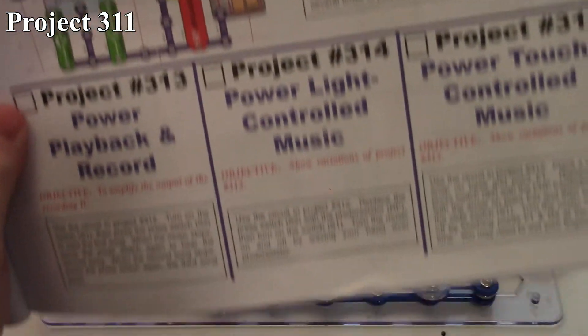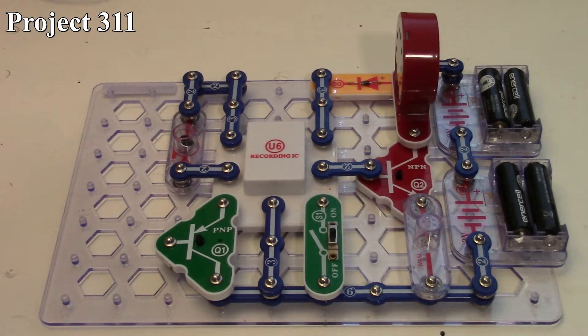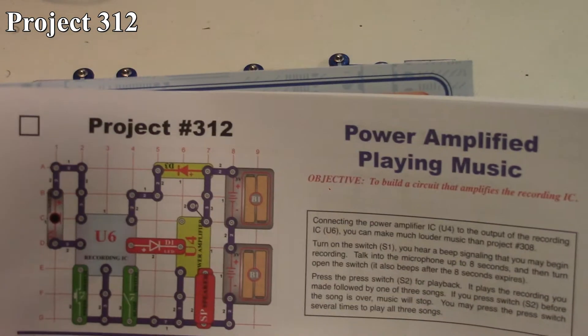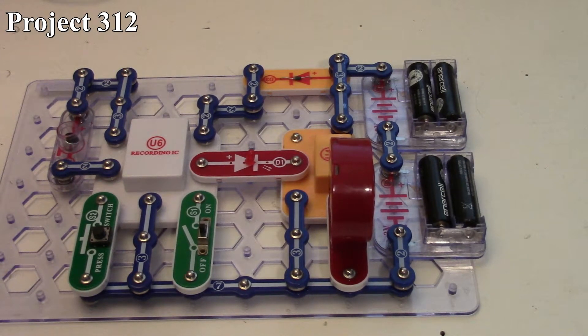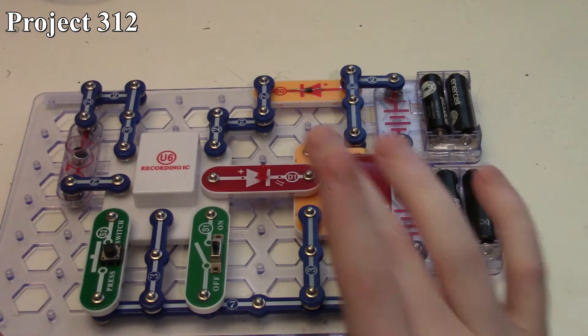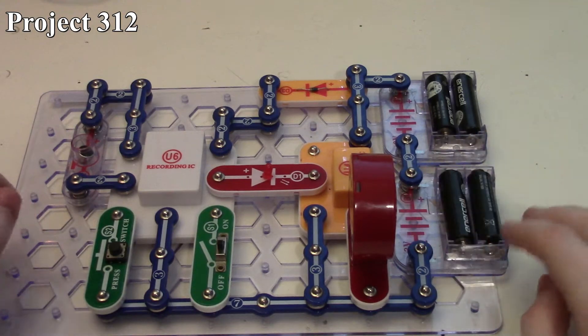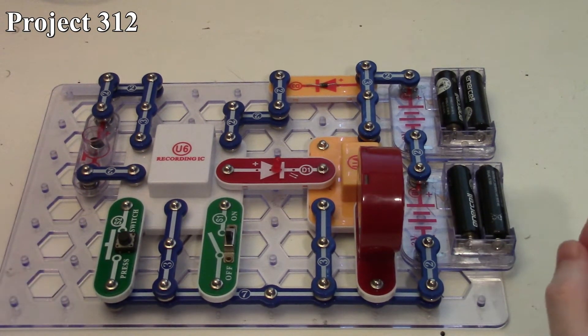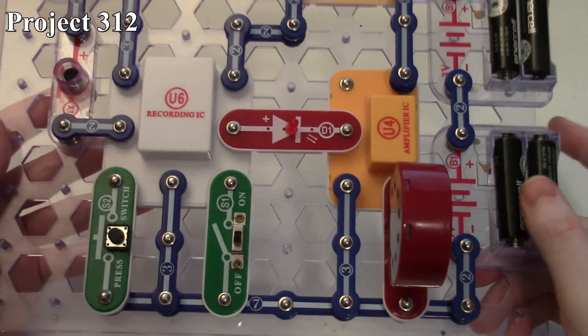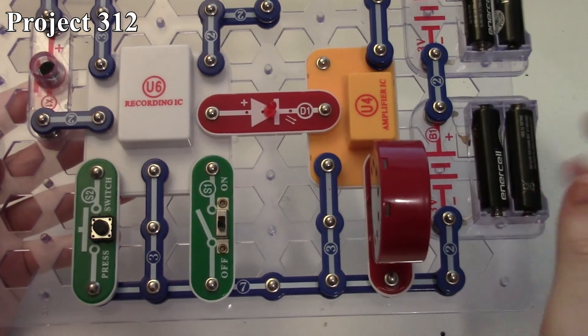Now we're going to move on to project 312 through 315, which is going to be the same thing, but this time we're going to have the power amplifier in there, so it's going to be louder. Here we have project 312, which is the power amplified playing music. It's pretty much just like the last set of projects we did with the recording IC, but this time, instead of using the NPN transistor for the controlled output, it's being fed through our power amplifier into the speaker, thereby allowing both the recorded audio and the built-in music to play more loudly. Our red LED here is acting as another diode for the power amplifier, but it's not really going to light. It's really just being used for the diode function.